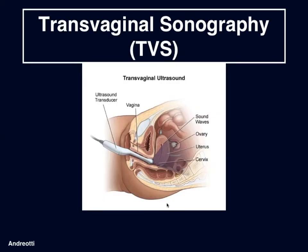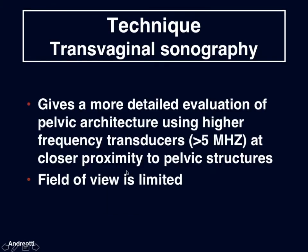Moving on to transvaginal sonography, we can see a drawing of the transvaginal probe in the vagina with the organs above it that we will be imaging — uterus and ovary. Transvaginal sonography gives a more detailed evaluation of pelvic architecture using higher frequency transducers, usually greater than 5 megahertz, at closer proximity to pelvic structures. But the field of view is limited.